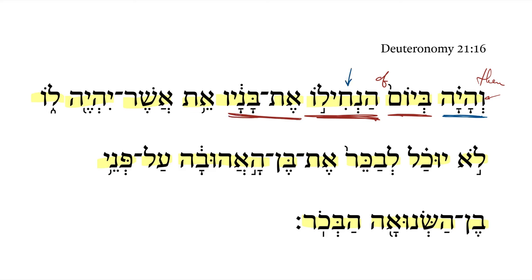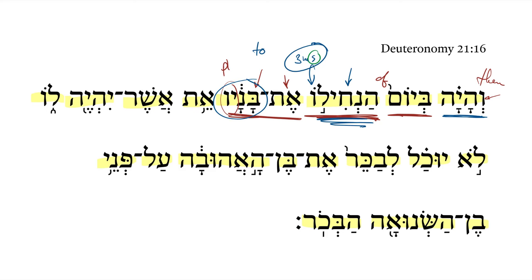Then it shall come about on the day of his giving the inheritance to his sons. This is a little bit awkward. We've got a hiphil infinitive construct here plus a third masculine singular pronominal suffix — notice this one is singular. Then we have the direct object marker with 'his sons,' and notice now we get the plural pronominal suffix. With the hiphil, we get this idea of giving his inheritance to his sons, or giving his sons his inheritance. Sons is plural, but inheritance is singular, so there's only one inheritance to give, which means this 'his giving of the inheritance' must be the act that the man is doing.